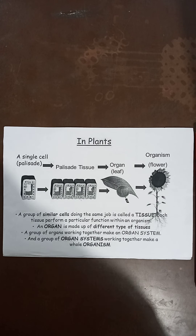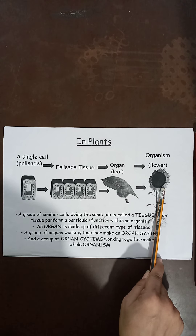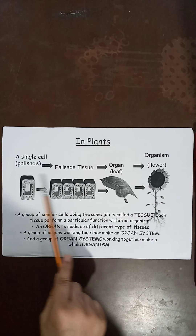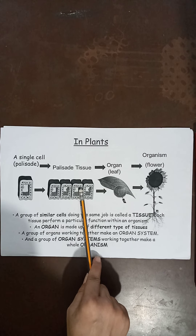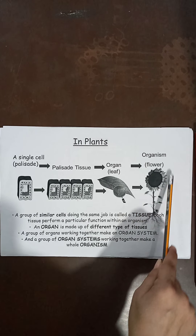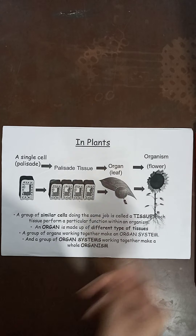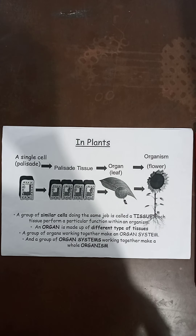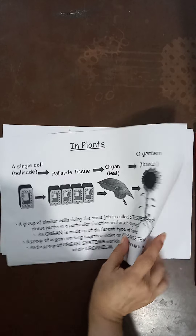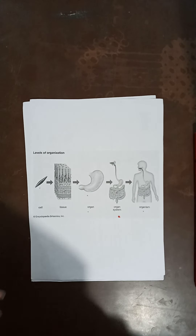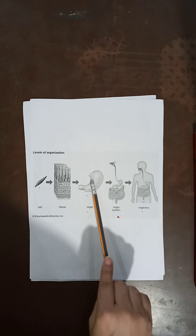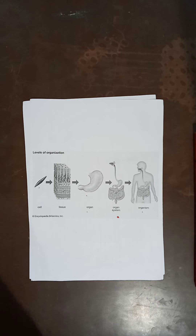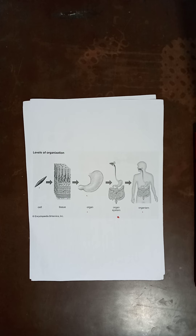This is how the plant body is organized. This is called the level of organization — it means it starts from small levels and builds up to a very big plant. Starting with the cell, then converting into tissues, then organs, and later on the whole plant body which is called the organism. The same type of organization is found in animals: cells combine to make tissues, different tissues make an organ, different organs make an organ system, and then an organism is formed.